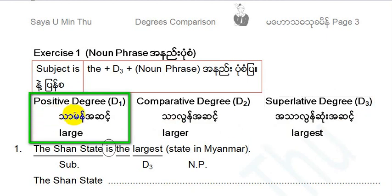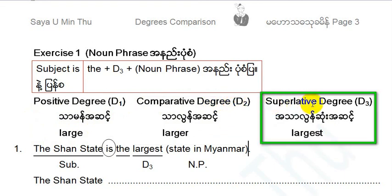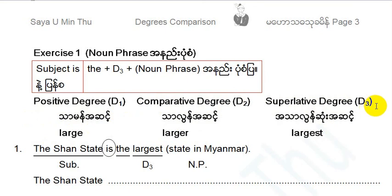Positive degree D1, comparative degree D2, superlative degree D3.